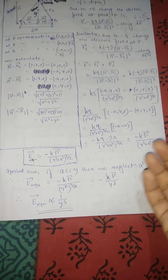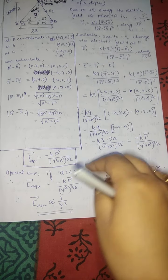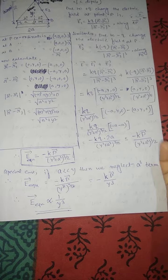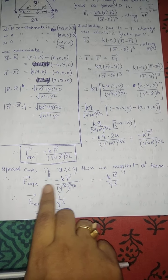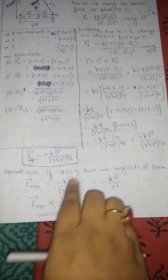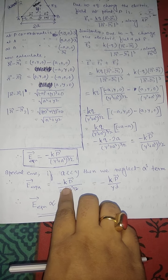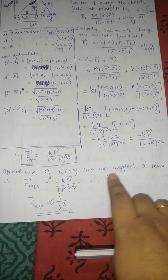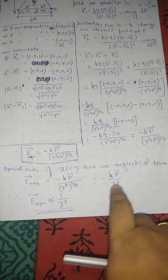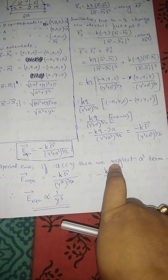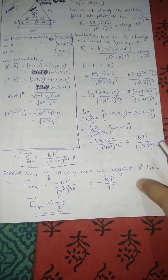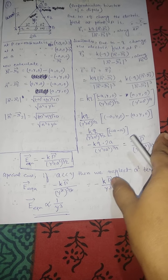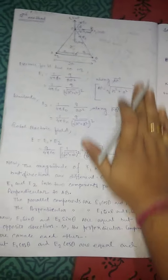At the equatorial point, E = −kp / (y² + a²)^(3/2). For the special case where a << y, we neglect the a² term, giving E_equatorial = −kp / y³. Since k and dipole moment p are constants, the electric field E is inversely proportional to the cube of the distance. This concludes the first method.